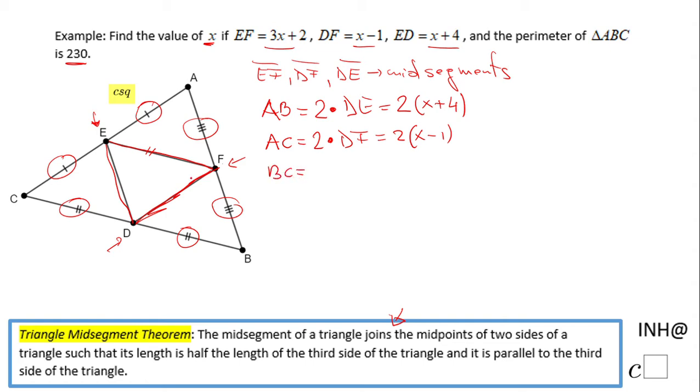And the last statement: BC is twice EF, which means 2 times (3x + 2). Now we know that if we add these three sides AB, AC, and BC, we get the perimeter of 230, so I'm going to write an equation here.